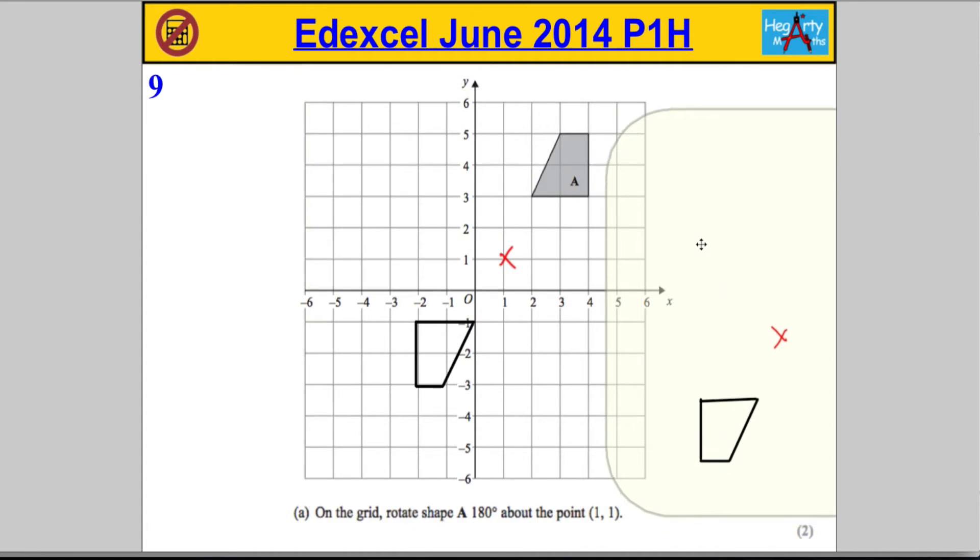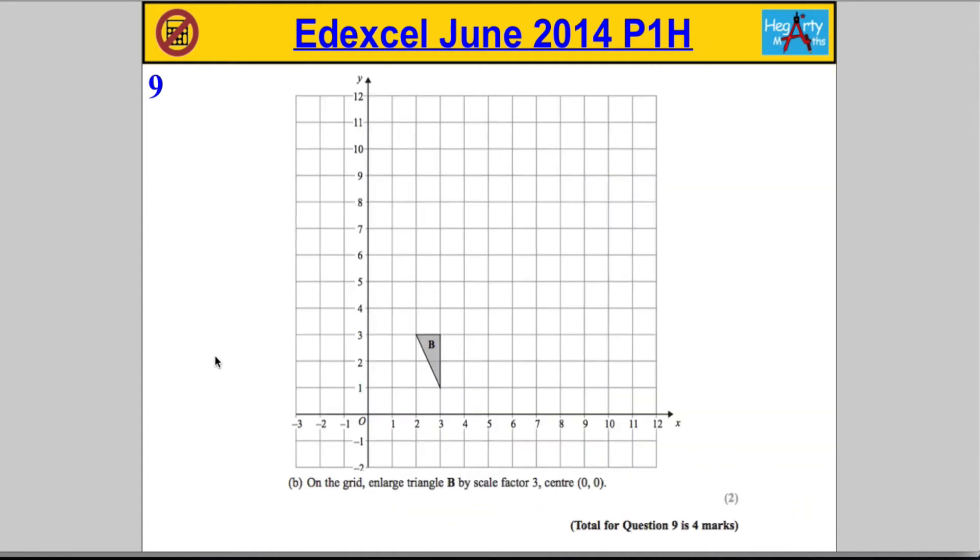Now the next part - we're asked on the grid to enlarge triangle B by a scale factor of three from the center (0,0). The center is going to be (0,0), that's where we're going to enlarge from, and the scale factor is three. This is literally an exercise in counting.